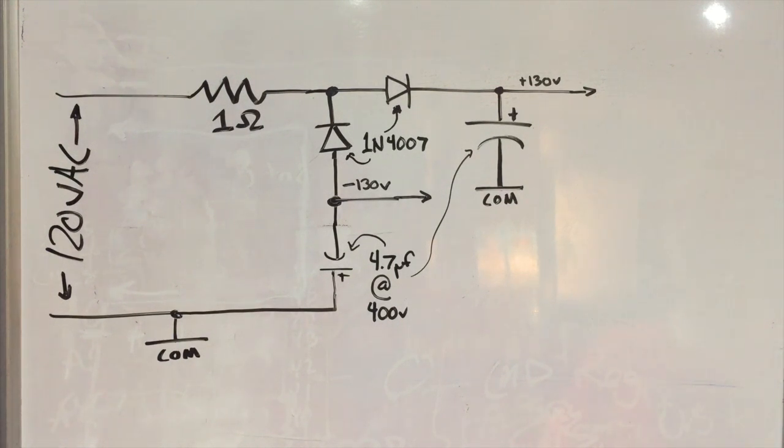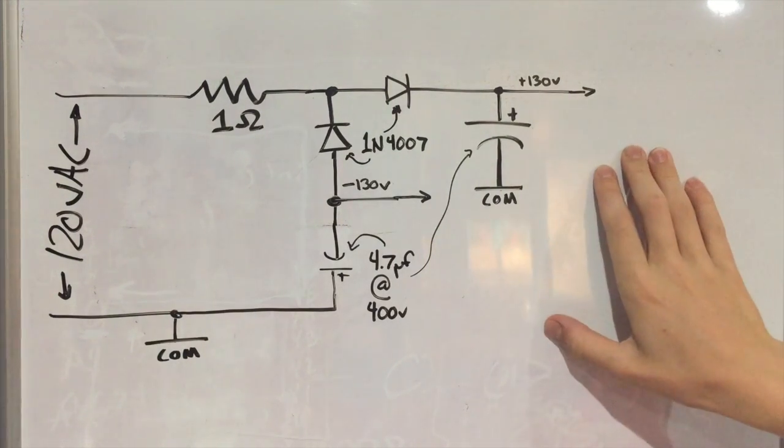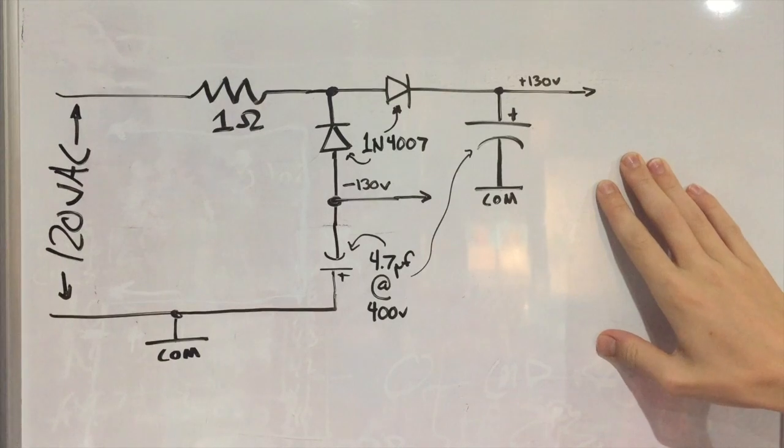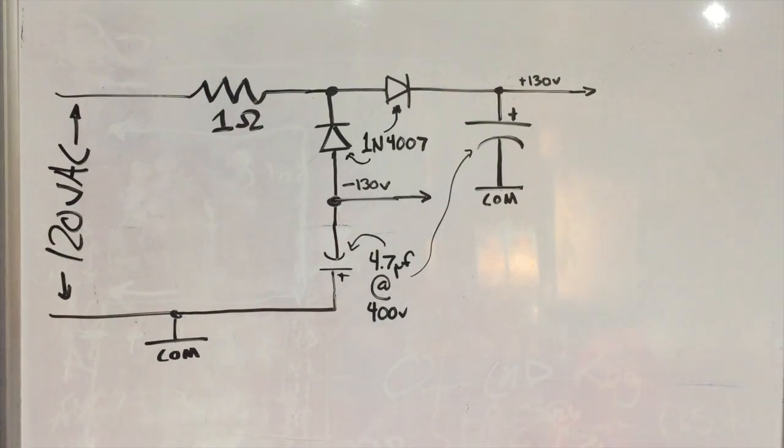Now the part that you can see on the whiteboard here is the voltage multiplier circuit, and this is how I'm managing to generate the high voltage needed for it. This is going to produce about 260 volts of DC, which seems to work for my setup.